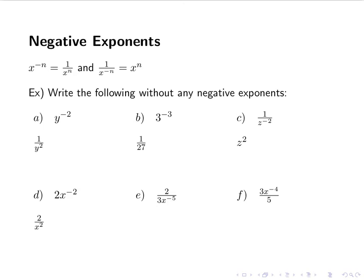For e, 2 over 3x to the negative 5. The 3 is not being raised to a negative exponent, so it stays where it is — in this case the denominator. So it's only the x that gets moved, and we end up with 2x to the 5th over 3.